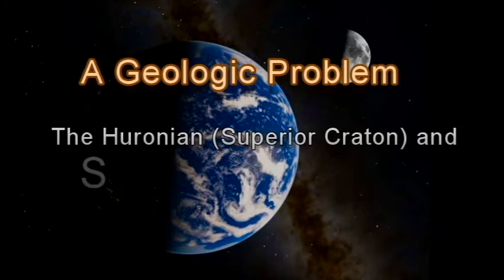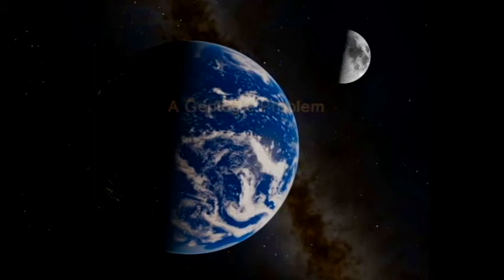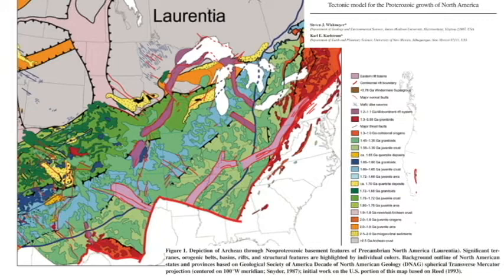Today we're going to have a little fun with plate tectonics and conjecture in the deep past — not back to Pangaea, not even back to Rodinia, but much further to the core of Laurentia and how North America began to grow. I'm going to deal with one problem in particular: the Huronian Supergroup and the Snowy Pass Group in Wyoming, because these metasediments have very similar geologic stratigraphies but are separated by something of an enigma.